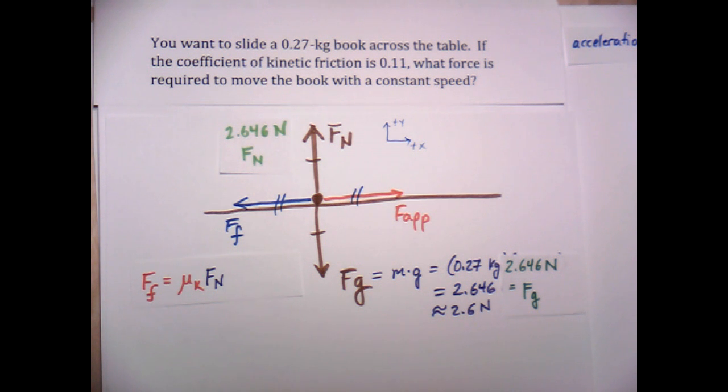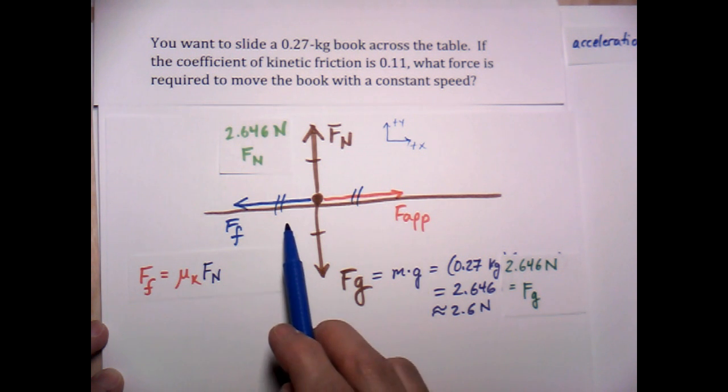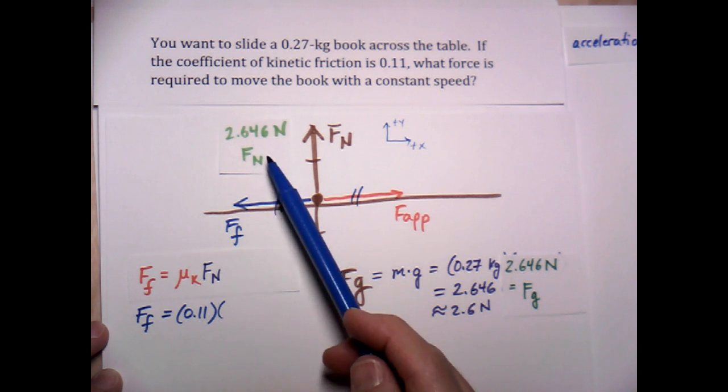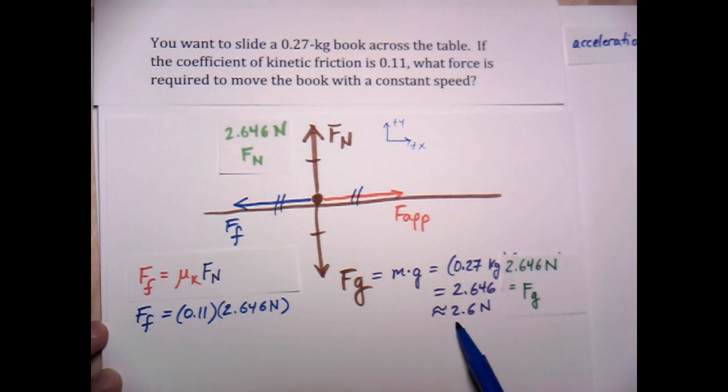So let's go ahead and solve this out now. With this equation, I can find the frictional force. And since the frictional force is equal in magnitude to the applied force, I can use frictional force to tell me what the applied force must be. It must be exactly equal to the frictional force. So frictional force is equal to coefficient of kinetic friction, which is given as 0.11, again, no units because it's a ratio, times the normal force, which is equal to the acceleration due to gravity times the mass, so Fg, so Fn, 2.646 newtons. And we won't round here just because we're looking for our final answer. We'll round at the end.